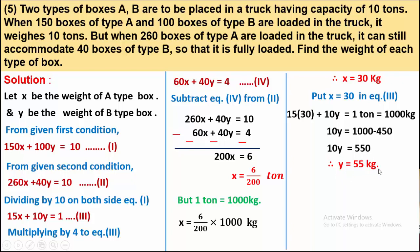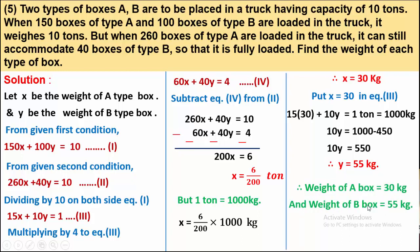So we get x equal to 30 kg and y equal to 55 kg. Weight of A type box is 30 kg and weight of B type box is 55 kg. That completes example number 5.